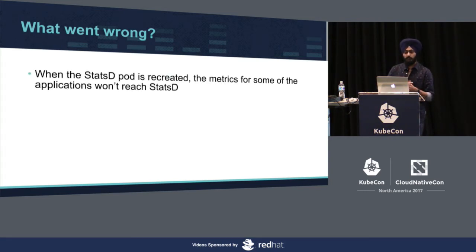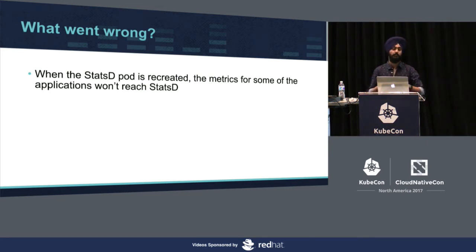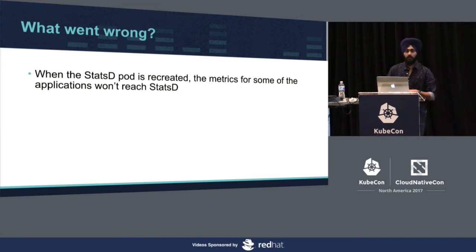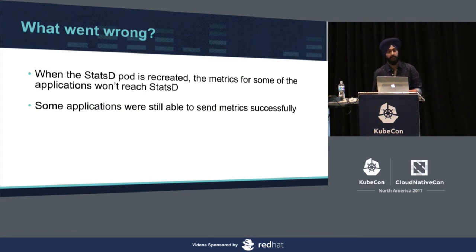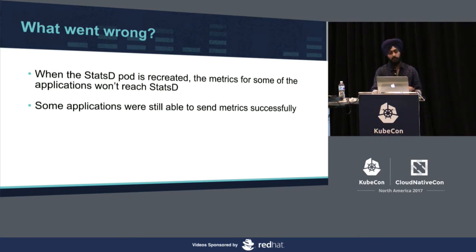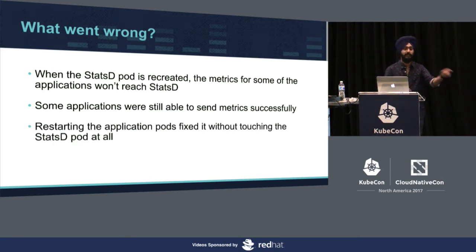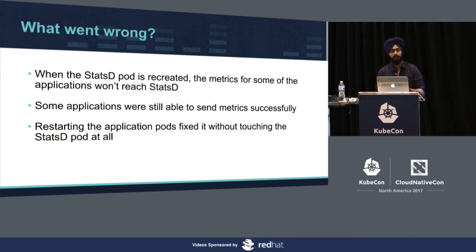So what went wrong? Whenever the Statsy pod stopped and was recreated, metrics for some services wouldn't reach Statsy. Some other applications were still able to send metrics, and even for some applications, some pods could send traffic but others could not. Interestingly, if we restarted the application pods, they would be able to send metrics without even touching the Statsy pod. This was quite confusing for a few weeks.